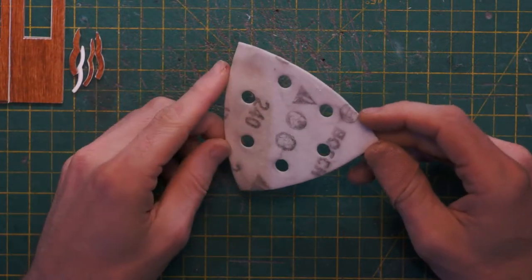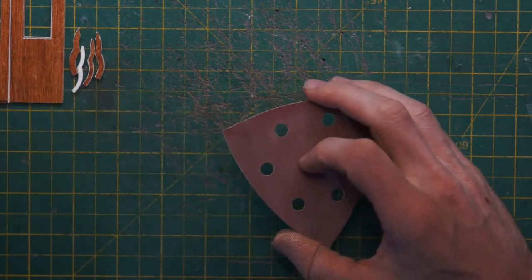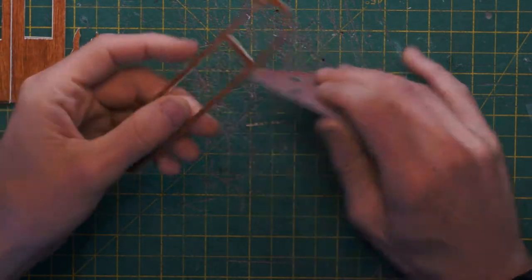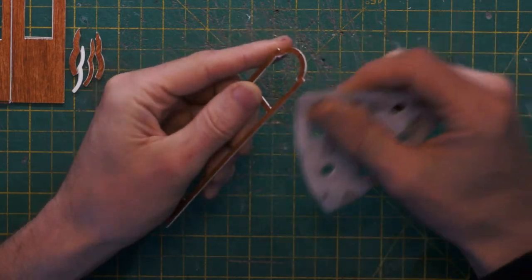I'm using 240 grit sandpaper which to be quite honest as we're using paper is quite brutal. So always be soft and gentle when you're trying to sand down cardboard paper.